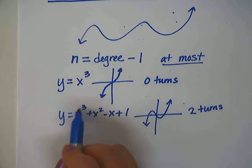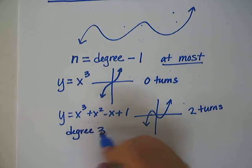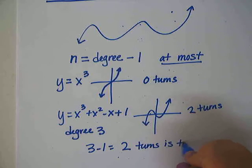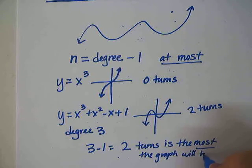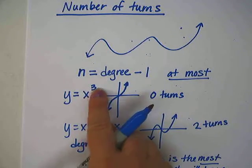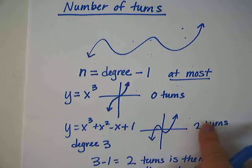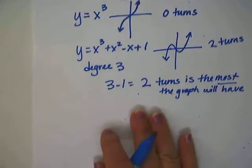The degree of this graph is 3. So since the degree is 3, we go 3 minus 1 equals 2, and so 2 turns is the most the graph will have. But this other one is also degree 3, but it has 0 turns. That's because 2 turns is the most turns it will have.